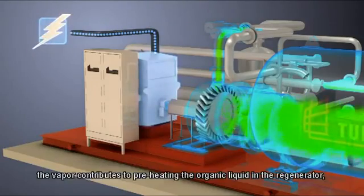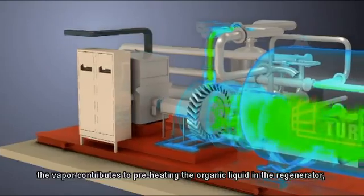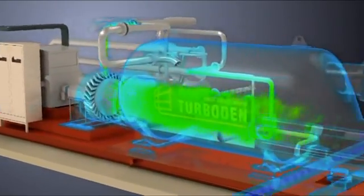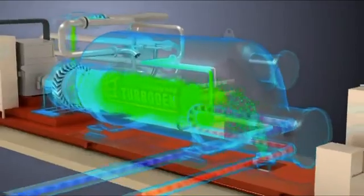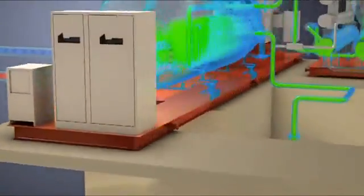Downstream of the turbine, the vapor contributes to preheating the organic liquid in the regenerator, contributing to higher efficiency as more of the thermal energy is utilized in the process.